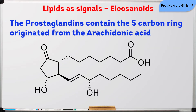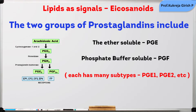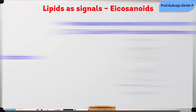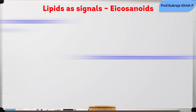The prostaglandins contain a 5-carbon ring that has originated from the arachidonic acid. They mainly belong to two major classes: ether soluble or phosphate buffer soluble class. These act by regulating the synthesis of cyclic AMP, which is an intracellular messenger. This does affect many cells and tissue functions.